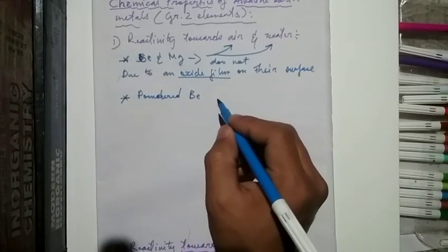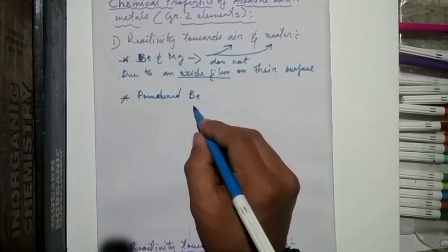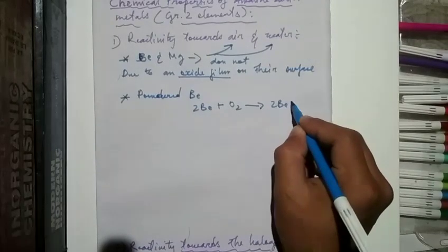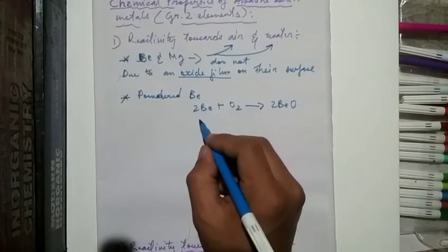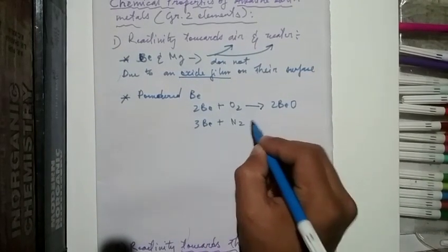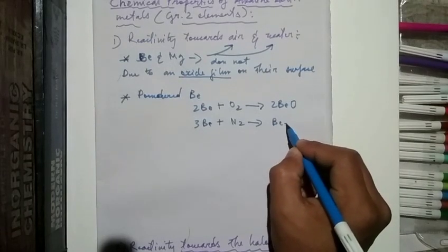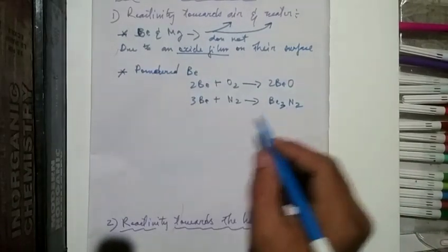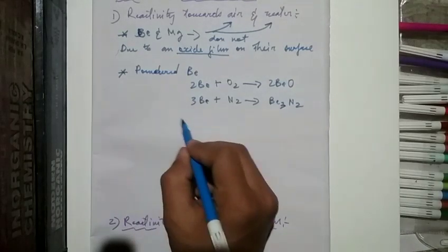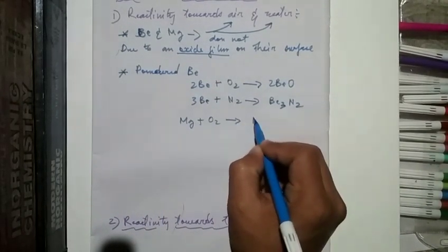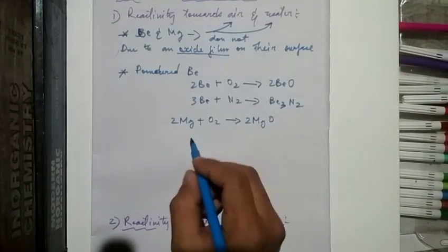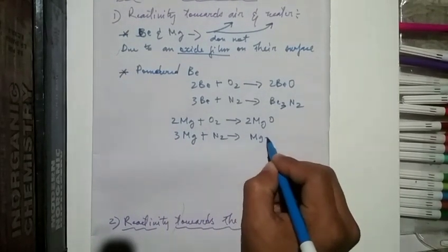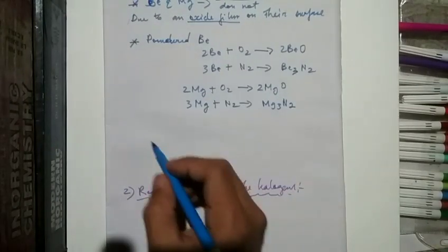2Be + O₂ gives beryllium oxide (BeO). 3Be + N₂ gives beryllium nitride (Be₃N₂). In the same way, Mg also reacts with oxygen to give MgO, and magnesium reacts with nitrogen to give Mg₃N₂.